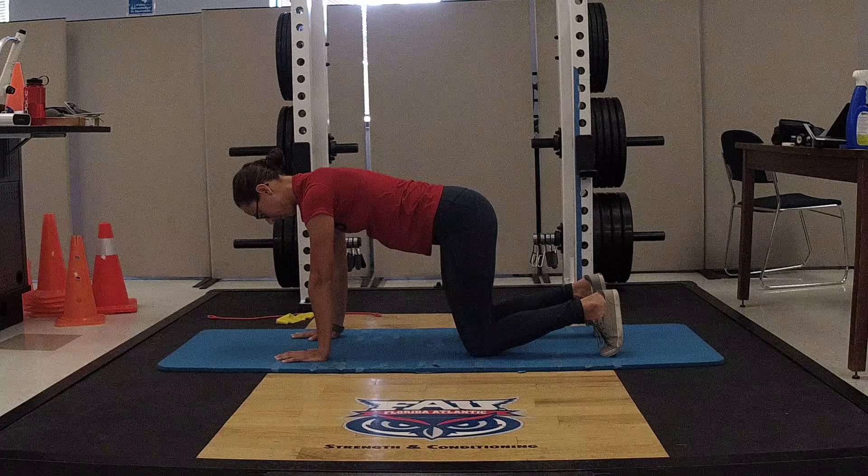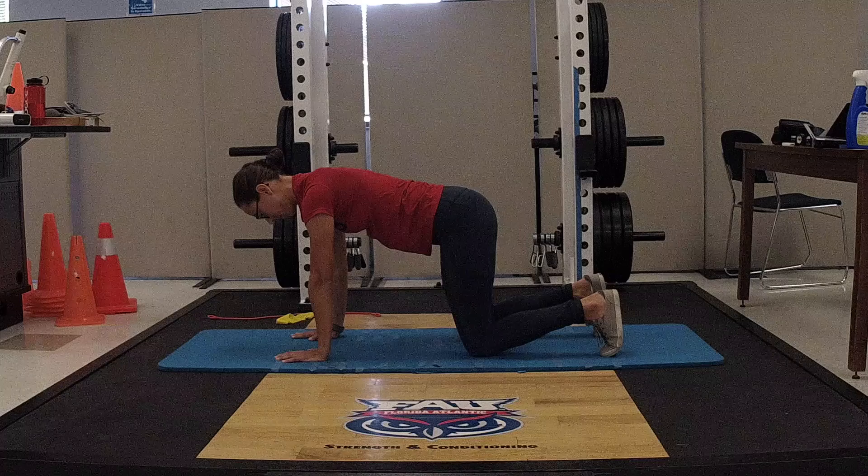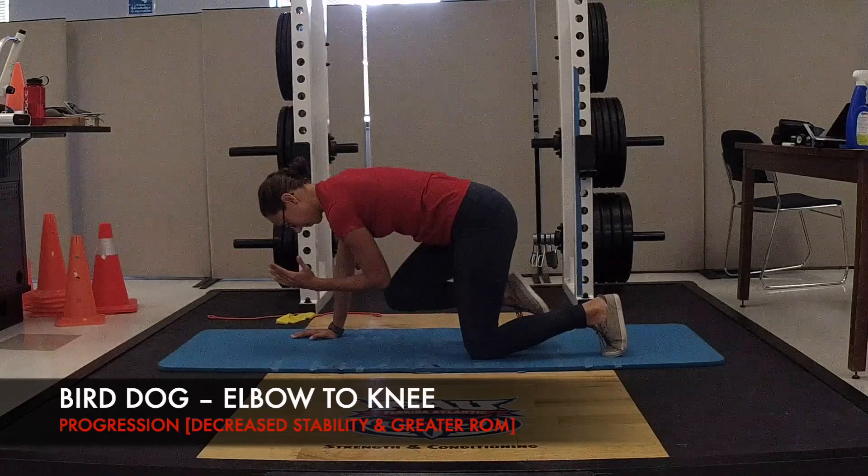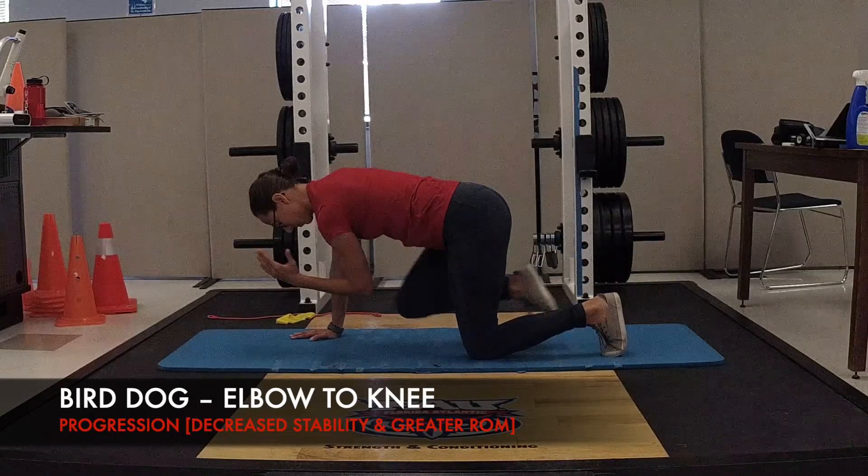Now on to exercise progressions. A simple way to make this movement harder would be to perform the movement on two points of contact the entire time. This variation is also considered a progression due to the increased range of motion as the elbow touches the knee.